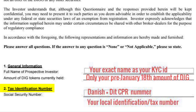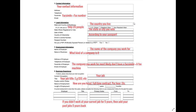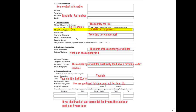Your tax identification number — in Danish, that's the CPR number. If you're outside the US, use your local identification number or tax number. For contact information, fill in your address, telephone number, and email. 'Facsimile' means fax machine — most people don't have one, so just write N/A. For legal information, write your state or country of residence. The next field — state where you're registered to vote — is only for US people.